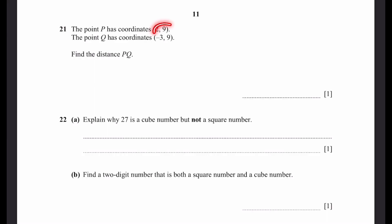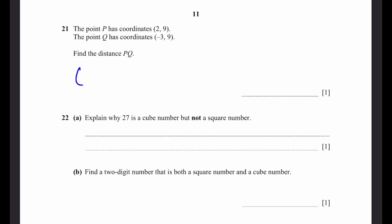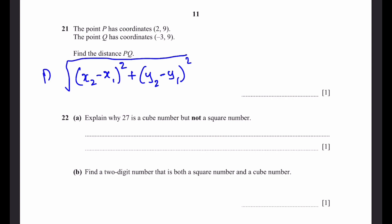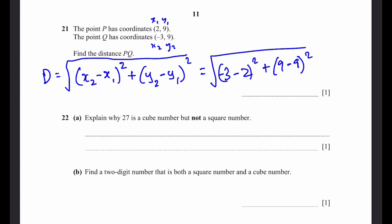Question 21. Point P has coordinates (2, 9) and point Q has coordinates (−3, 9). Find the distance PQ. Using the distance formula: √((x₂ − x₁)² + (y₂ − y₁)²). That's √((−3 − 2)² + (9 − 9)²) = √(25 + 0) = √25 = 5 units.